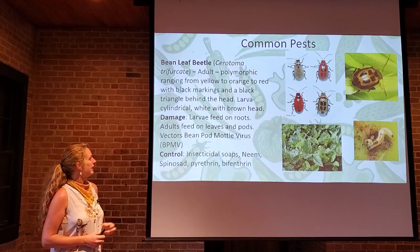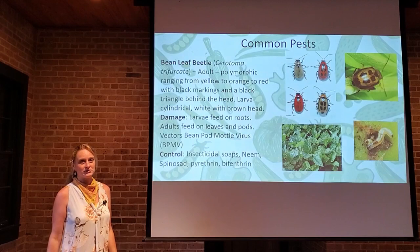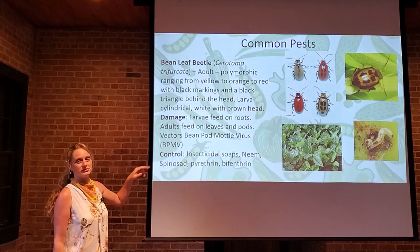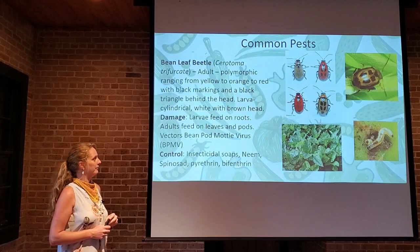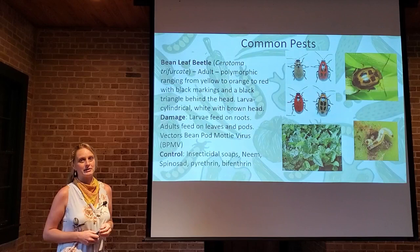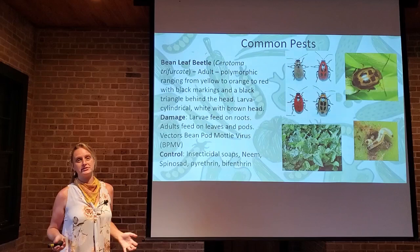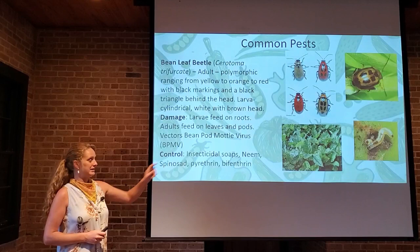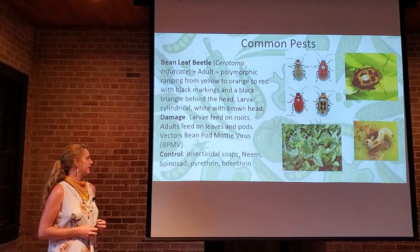The bean leaf beetle also gets confused for ladybugs. They come in many colors and patterns — mostly reddish or tan with four spots in the New Orleans area. The larva is almost like a small grub and feeds on the roots, while adults feed on the plant canopy — a one-two punch. If you see a lot of wilting or collapse of bean plants, pull some up and check for larvae feeding on roots. Control options include insecticidal soap, neem oil, spinosad, pyrethrin, and bifenthrin.